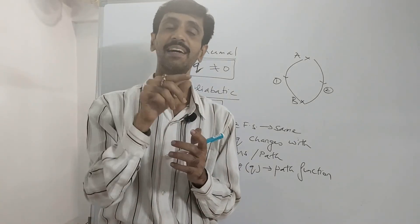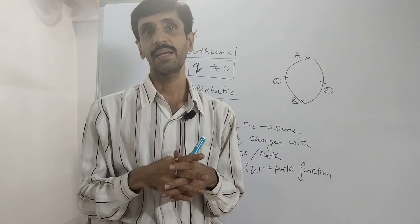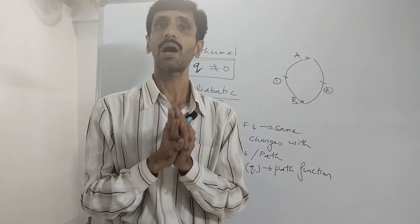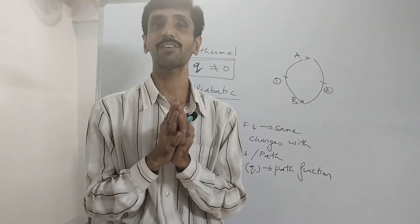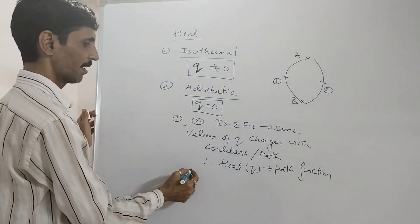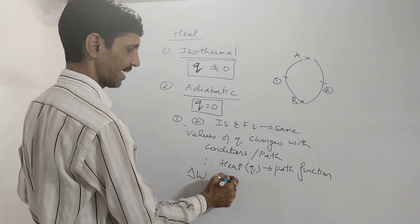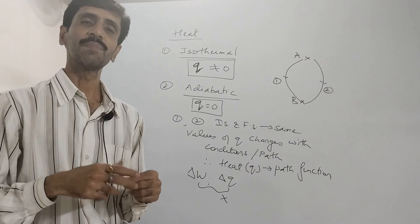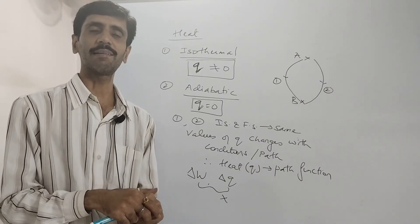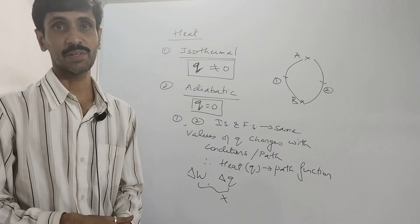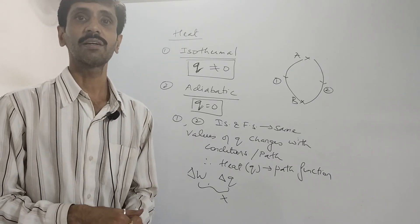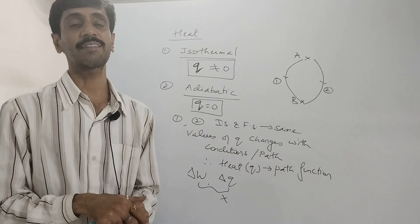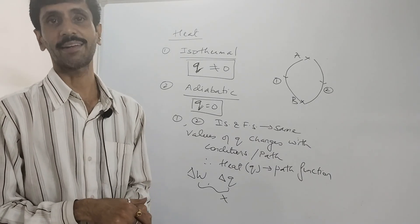I want to tell you that delta is a symbol of state function. So we should not write delta W or delta Q, because W and Q are not state functions — they are path functions. Therefore we will not use delta W or delta Q; those are wrong. I hope with these two examples of work and heat, we are very clear as far as the path function is concerned. A path function is a property whose value depends only on the conditions and does not depend on the initial state and the final state.